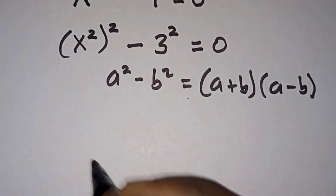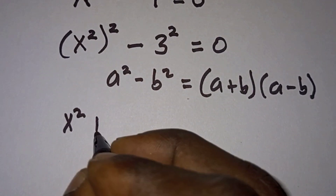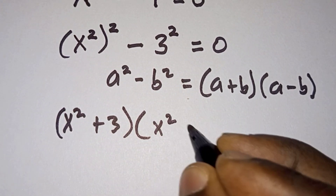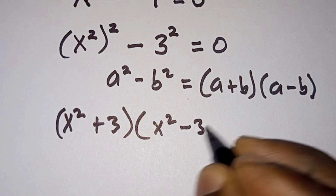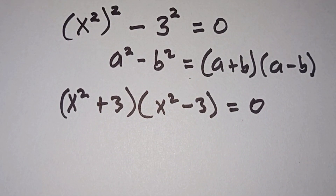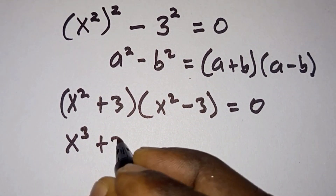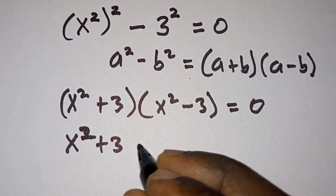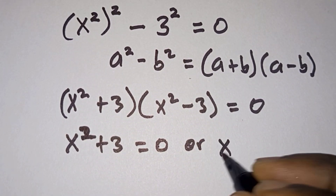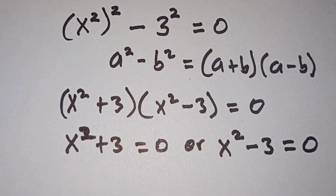So we can write this as x squared plus 3 times x squared minus 3, and this is equal to 0. From here we can see that x squared plus 3 is equal to 0, or x squared minus 3 is equal to 0.